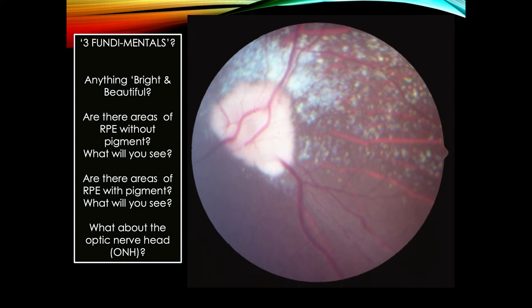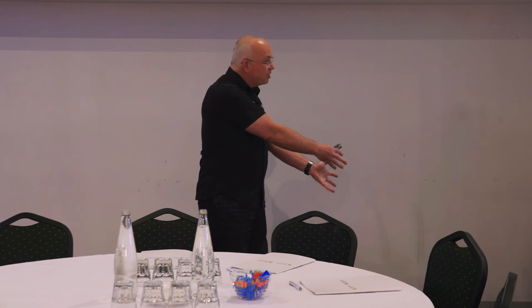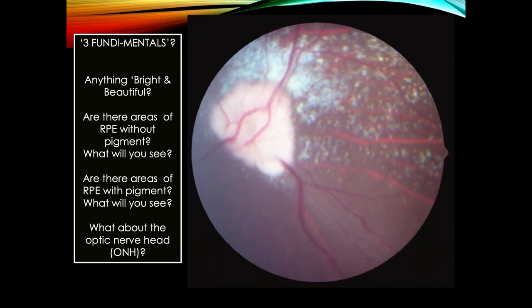Anything bright and beautiful? Yes, this time it's blue. How much pigment in the RPE over it? None, because there's tapetum there — you can see it. It's either tapetal fundus with tapetum present, or non-tapetal fundus. You don't have a situation where there is tapetum and pigment present in the RPE — there'd be no point. Non-tapetal fundus — how much pigment in the RPE? Lots — perfect.